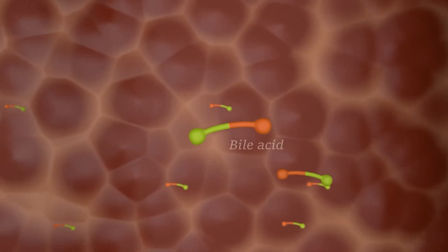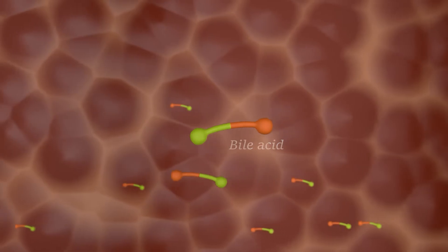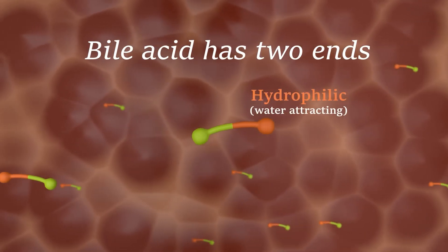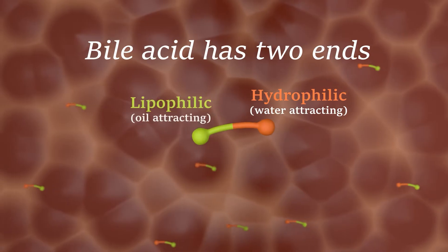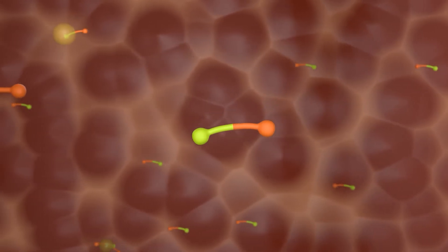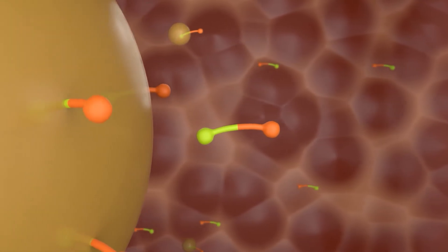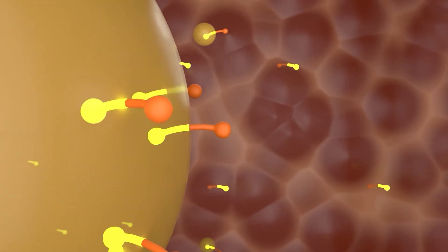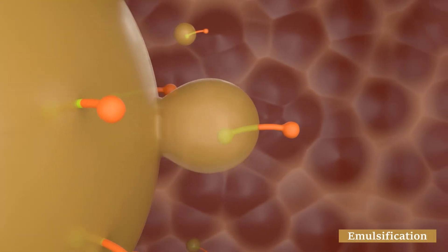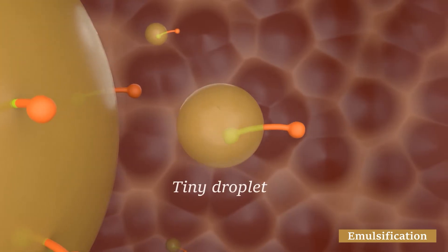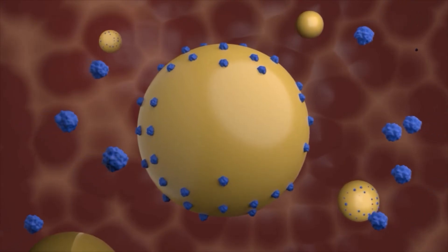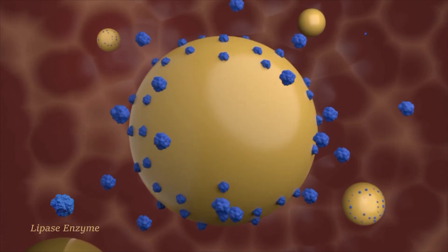Bile has bile acid which has a special structure that combines hydrophilic and lipophilic elements. One end can mix in water and the other will insert into the fat. In this way, fat can be emulsified into little droplets, which creates a large contact area with the lipase enzyme.